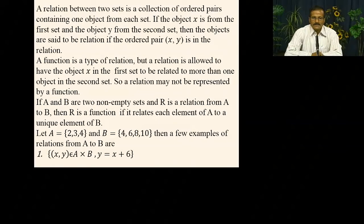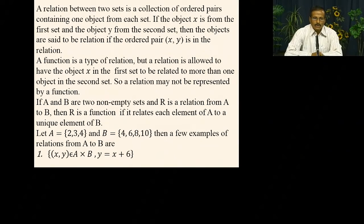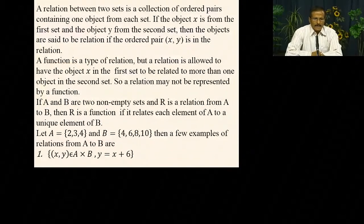We have two non-empty sets and R is a relation from A to B. Then R is a function if it relates each element of A to a unique element of B. We say that this function is a type of relation — when each element of set A maps to a unique element of B. For example, A contains {2, 3, 4} and B contains {4, 6, 8, 10}. We define the value and get the y value.